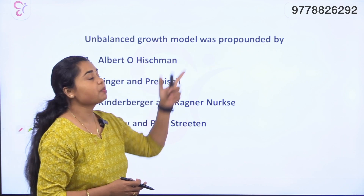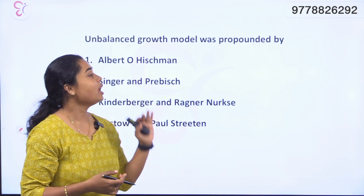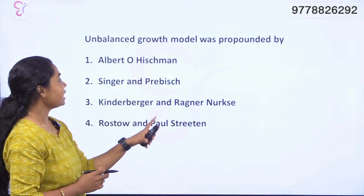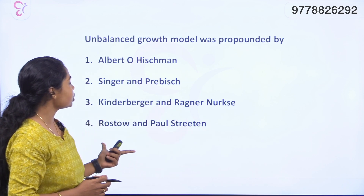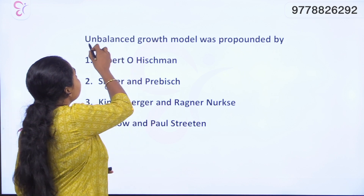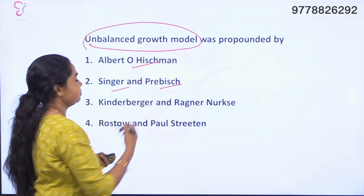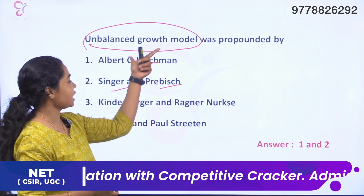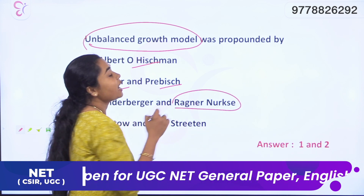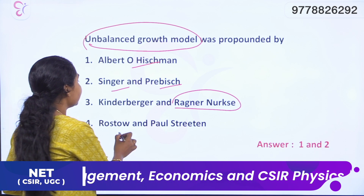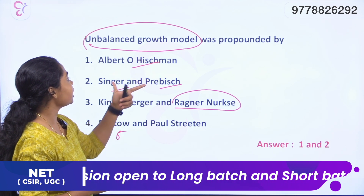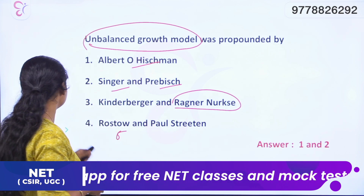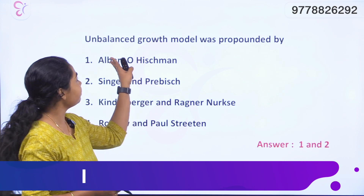Question 2: Unbalanced Growth Model was proposed by whom? Ragnar Nurkse is associated with the Balanced Growth Model. Hirschman and Singer are related to the Unbalanced Growth Model. The answer is Hirschman, Singer, and Prebisch — Unbalanced Growth Model.